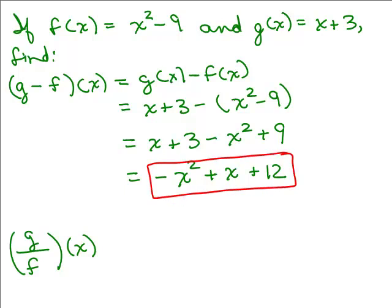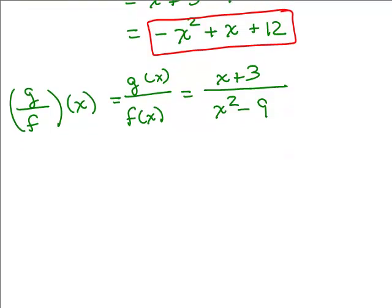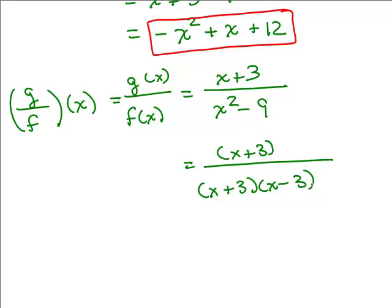What about g over f of x? So g(x) over f(x), that's what it means. g(x) is x + 3, and f(x) is x² - 9. So the difference here is what's in the numerator and the denominator. The factoring is going to be the same. We have x+3 in the numerator and (x+3)(x-3) in the denominator. So let's see, those x+3's cancel. But keep in mind, you're going to have a 1 in the numerator. So we have 1 over x - 3.